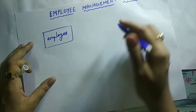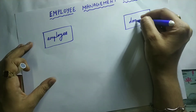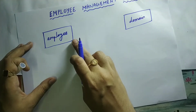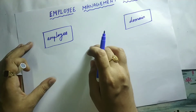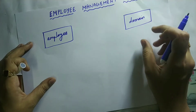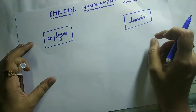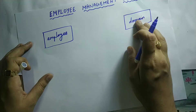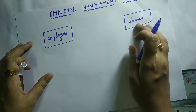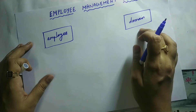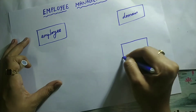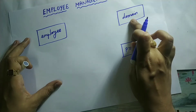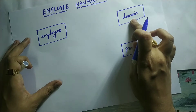The next entity is domain. For example, if the employee belongs to an IT field, there will be many languages like Java, C sharp, and many more. So domain means that language — Java, C sharp, those are all the domains. Some employees belong to the Java domain, some to the C sharp domain. This domain is not physically existing; it is conceptually existing. So therefore it is also an object and it is an entity.